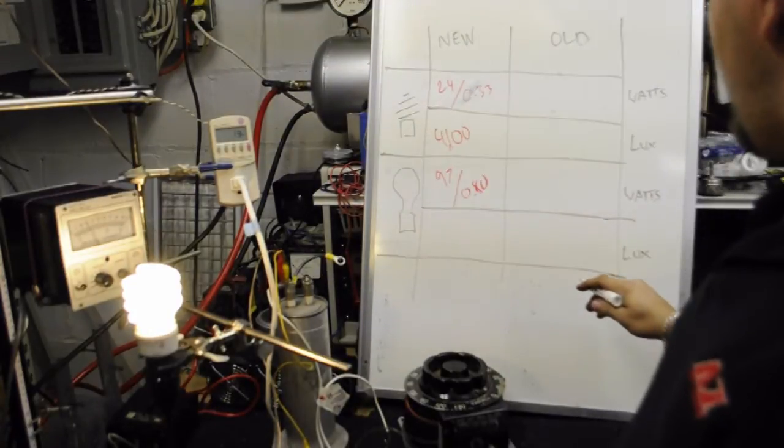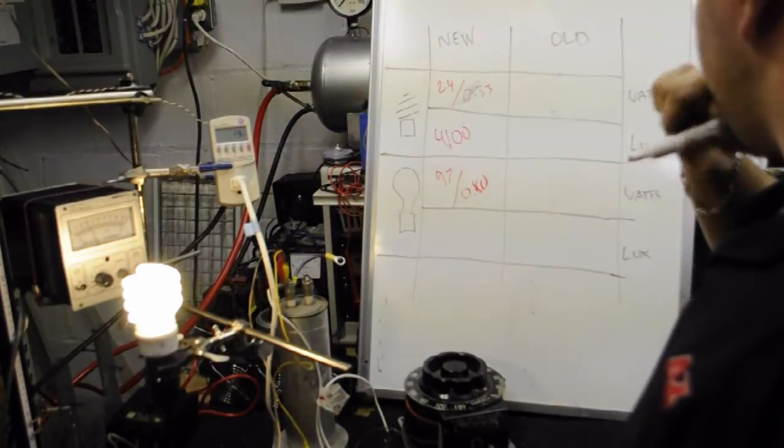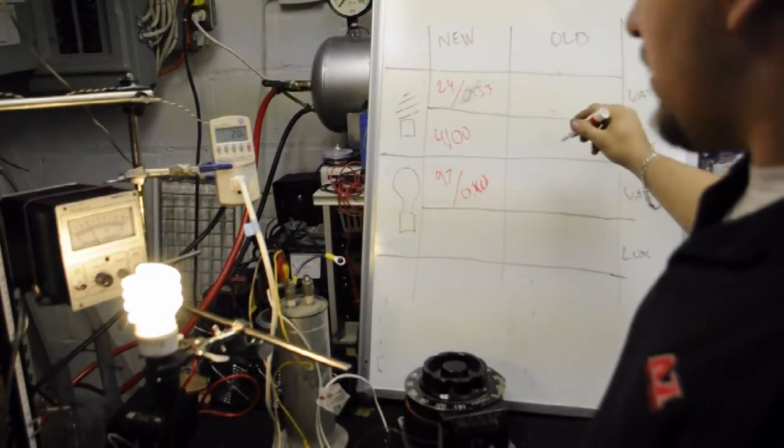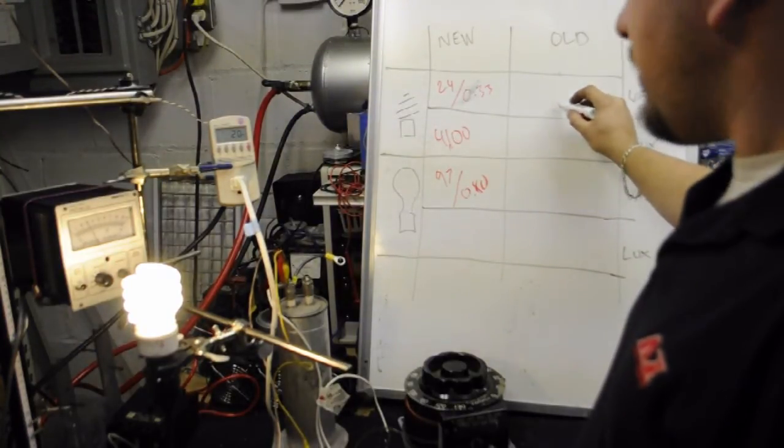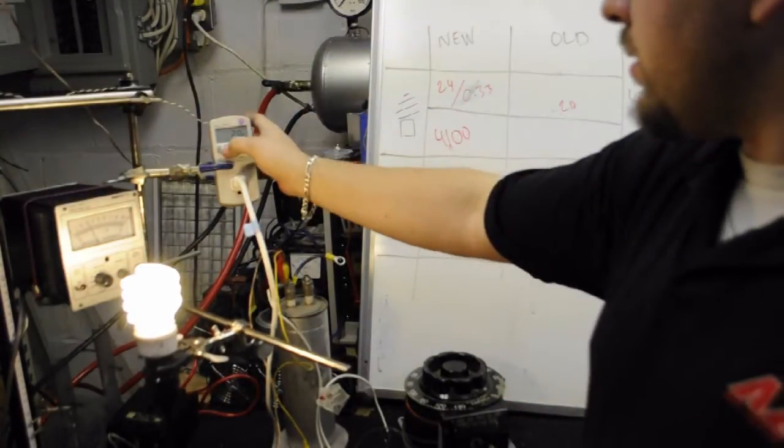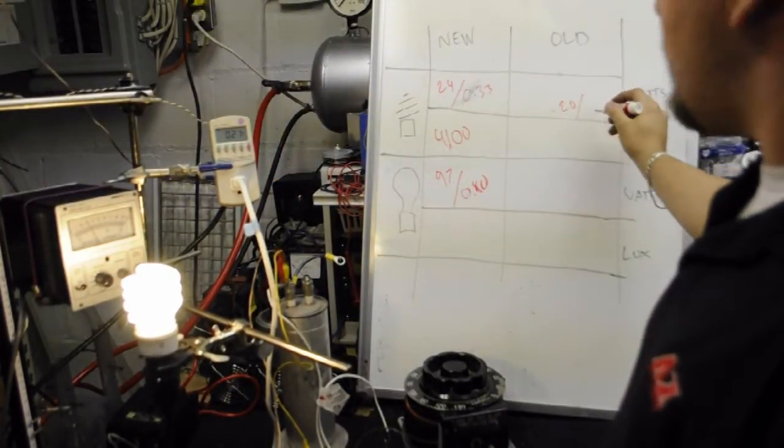So on the old bulbs, we're currently at, for wattage, 20 watts. And current is 0.27.